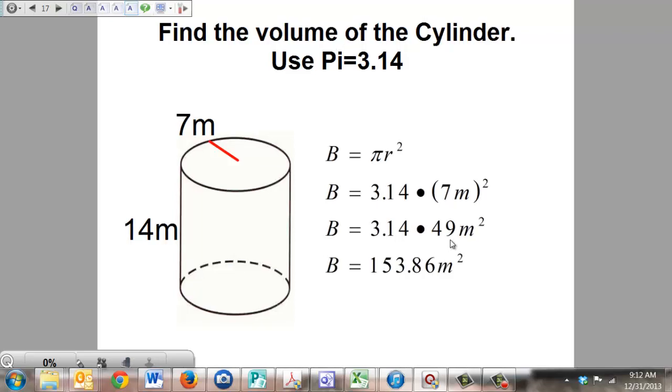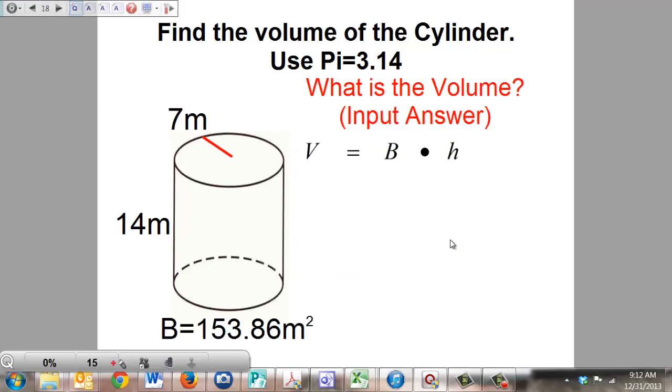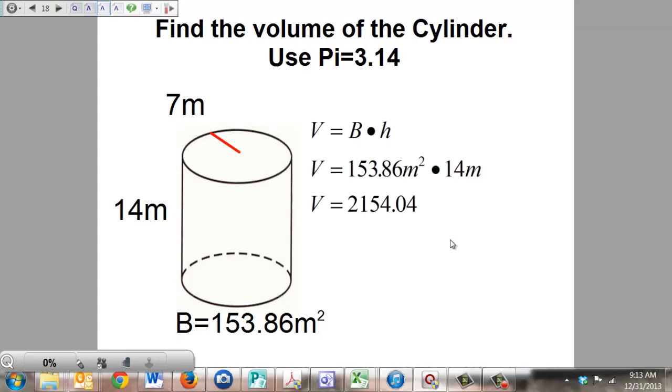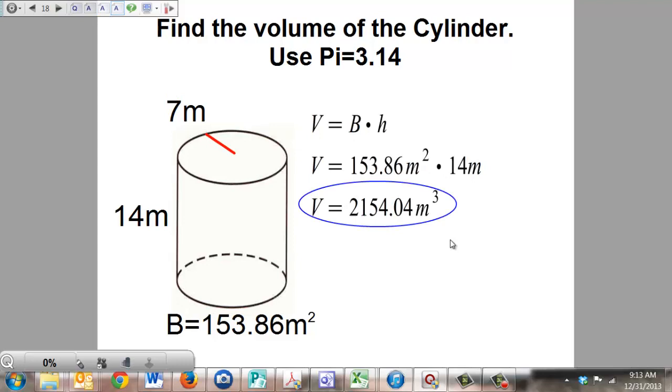But remember that's just the base area. We have to find the volume. The volume formula is volume equals base area times height. So we take that 153.86 meters squared, multiply it times the height of 14 meters, and you get 2,154.04 meters cubed. That's all there is to it.